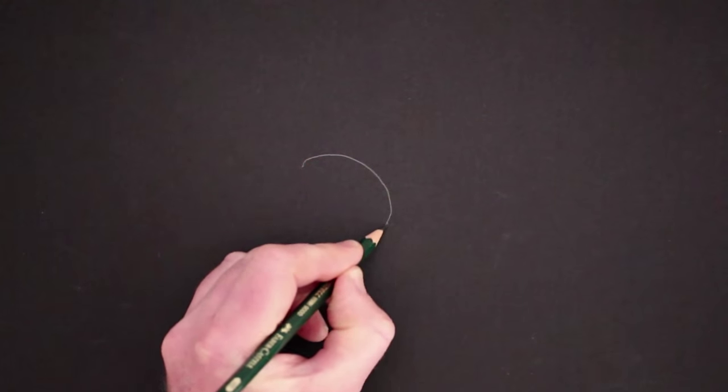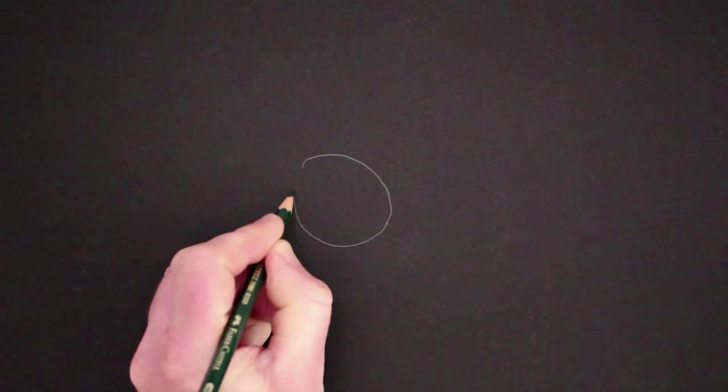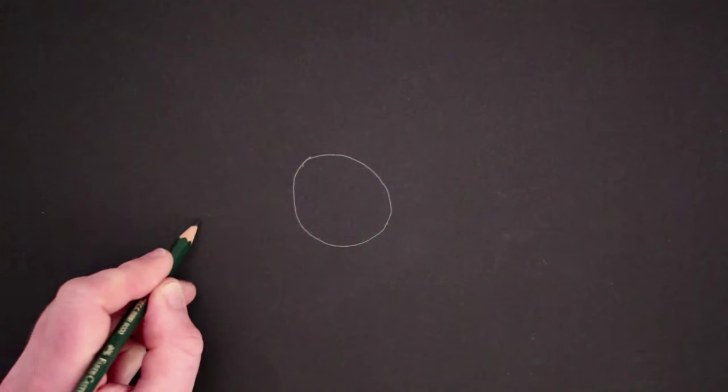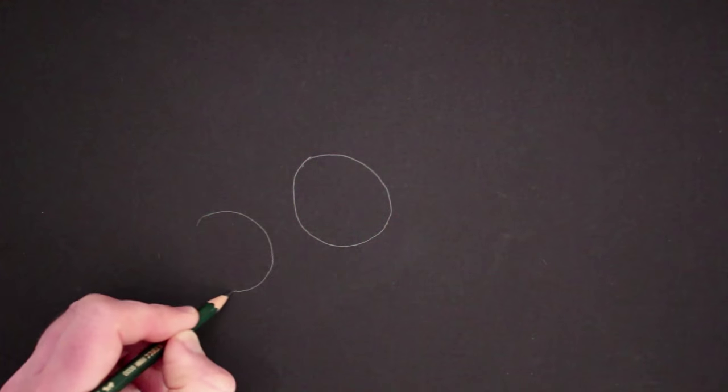The first step in this drawing is to draw a circle, just a simple circle somewhere in the center of your page, and then another circle towards the left of it, maybe slightly smaller, and then we'll join these two circles up.